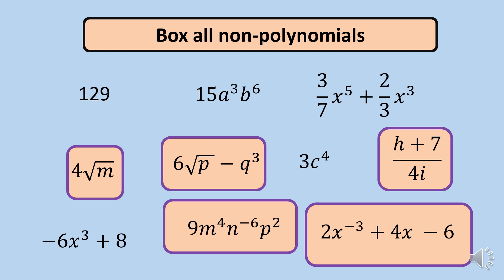The rest are polynomials. You have 129, which is a constant — it is a polynomial. Then 15a cubed, b raised to 6 — the exponents are whole numbers and positive, so it is a polynomial. Then 3 over 7x raised to 5 plus 2 over 3x raised to 3 — this is a polynomial. Then 3c raised to 4 — it's a polynomial. And lastly, negative 6x raised to 3 plus 8 — also a polynomial. I hope you got all the correct answers.